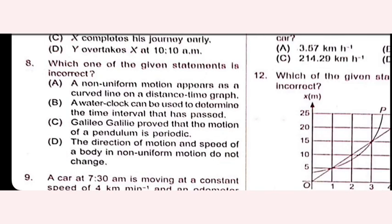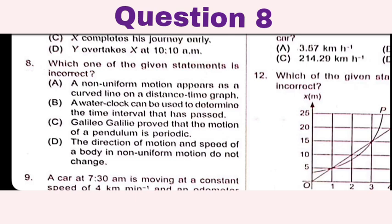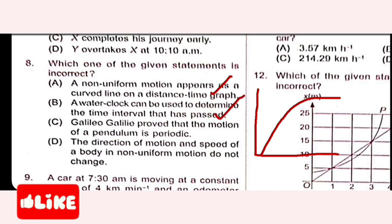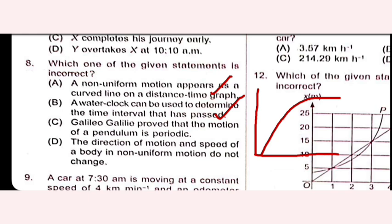Which statement is incorrect? Non-uniform motion appears as a curved line on a distance-time graph — correct. A water clock can be used to determine time intervals — correct, as water drips from upper to lower vessel at a fixed rate. Galileo proved pendulum motion is periodic — also correct. The direction of motion and speed in non-uniform motion do not change — this is incorrect. Option D is the right answer.